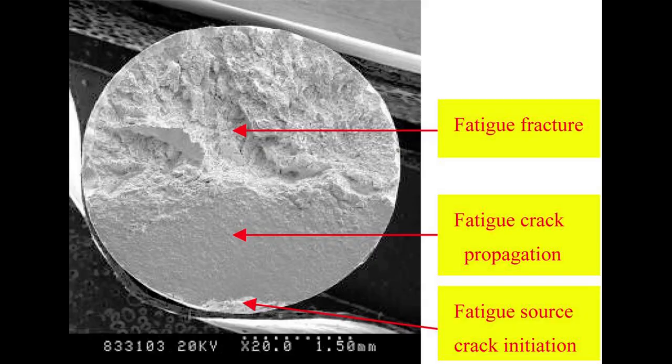I firstly show a fatigue specimen — in this case it's a round bar. It's got an initial flaw at the bottom which would have been a manufacturing defect. Under fluctuating load this has developed into a fatigue crack. It's grown across approximately 40% of the surface area before it reached a critical size and it let go as a fast fracture.